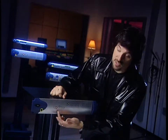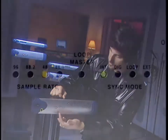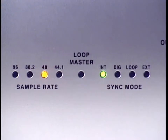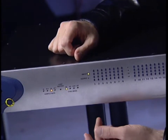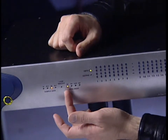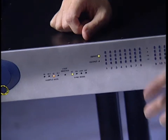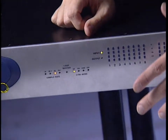Let's take a look at the front. Here we've got our sample rate indicators showing 44.1, 48, 88.2, and 96k. Next to this, we have our sync mode indicators. Internal sync mode means that the 96|IO is referencing its own internal crystal as the clock source for your selected sample rate.